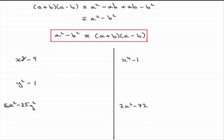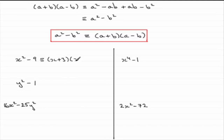So this first one is a very basic one that follows this pattern. This is the square of x, and 9 is the square of 3, and we've got a minus sign between them. So this is going to be identical, according to this pattern structure, to x plus 3 multiplied by x minus 3. You could also write x minus 3 times x plus 3 — it wouldn't matter, you'd get the same result.